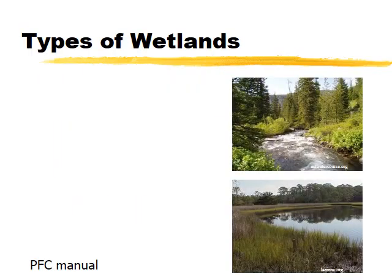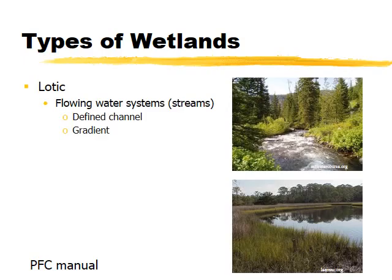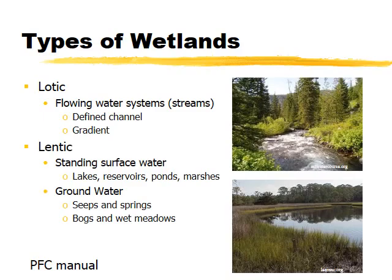PFC identifies two categories of wetlands. First is lotic — those are the flowing systems, the streams and rivers, which have a defined channel and a downward gradient. The second group is lentic systems, which have standing surface water, including lakes, rivers, ponds, and marshes. Lentic systems can also include seeps, springs, bogs, and wet meadows.